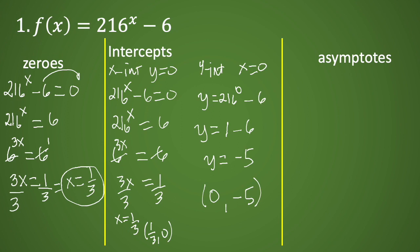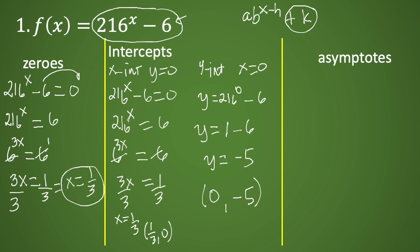Now let's find the asymptotes. Remember the formula: a times b raised to x minus h plus k. Evaluating this function, our k is represented by negative six. Therefore, the horizontal asymptote is simply y equals negative six.